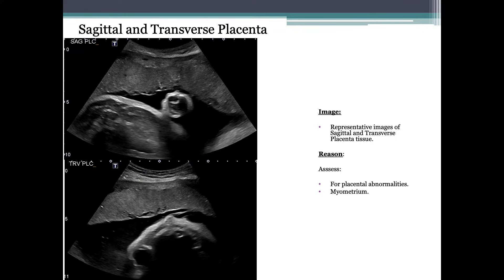Moving on to the sagittal and transverse placenta images: after completing a full sweep of the placenta in sagittal, take an indicative image in the same plane, repeated in transverse. You are assessing the placental tissue for areas of calcification, infarcts, placental venous lakes, retroplacental hematomas, subchorionic hematomas, placental abruption, chorioangiomas, areas suspicious for AIP (abnormally invasive placenta), and anything inconsistent with a healthy placenta. During the sweep you are also assessing the myometrium for any fibroids.